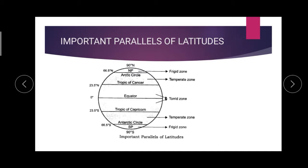Now we are going to see about heat zones. First, the place between the Tropic of Cancer and Tropic of Capricorn — this place is called the Torrid Zone.